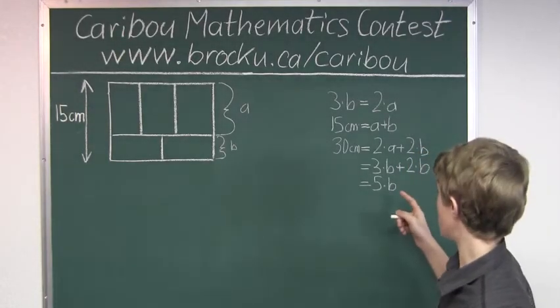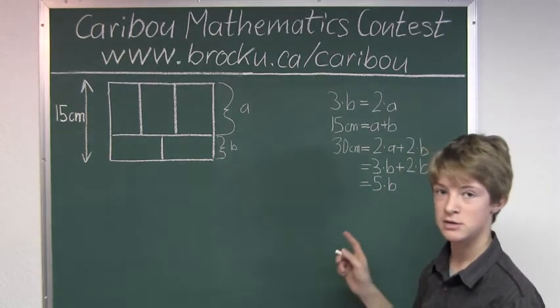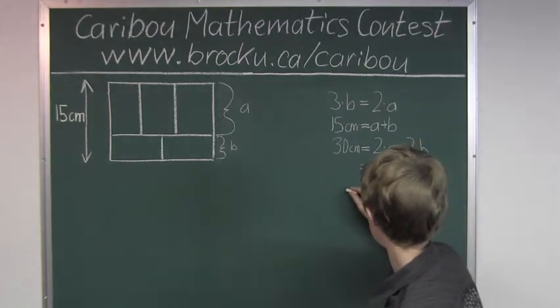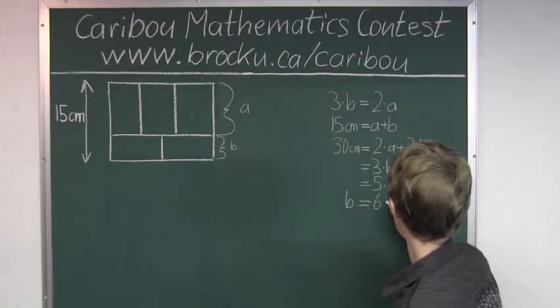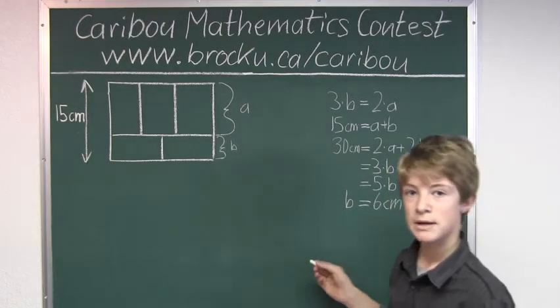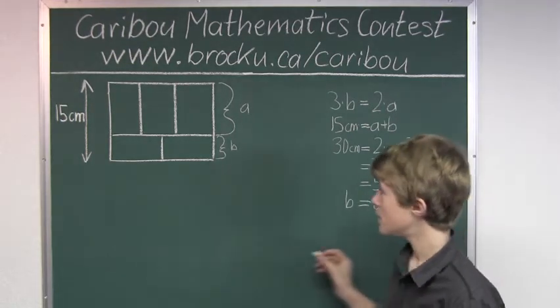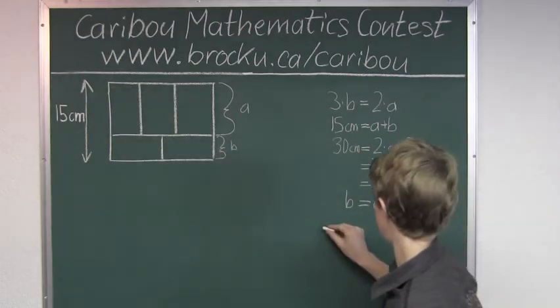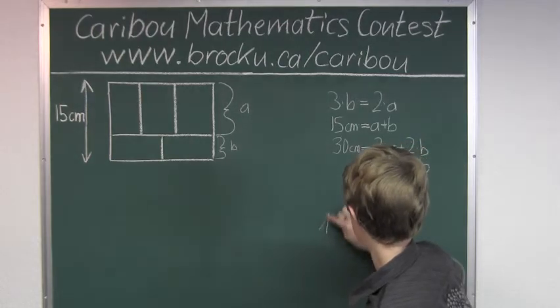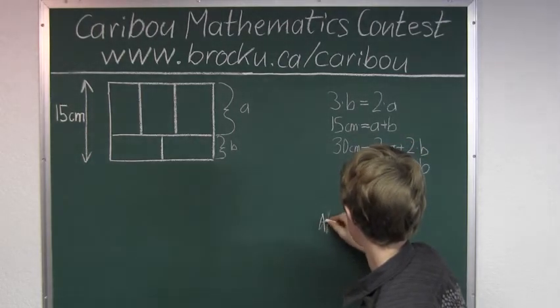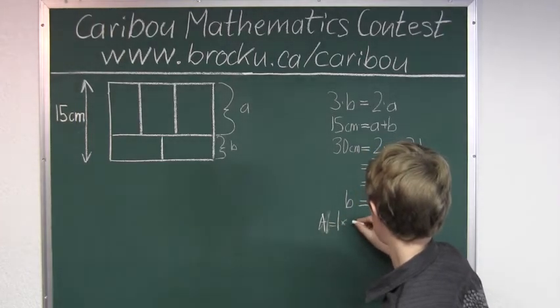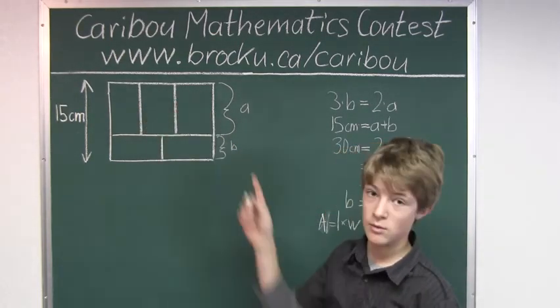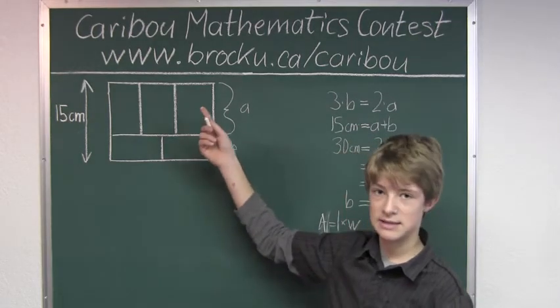So if we know that five times b is 30 centimeters, then we know that one b is six centimeters. So now we can figure out the area. The area is calculated by length times width. So the length would be three times b, which is three times 6 centimeters, which is 18 centimeters.